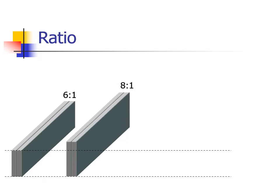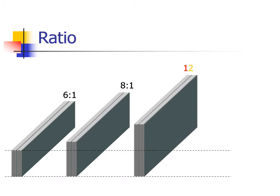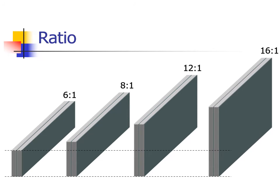Another common grid ratio is eight-to-one. Note that it is two units higher than the six-to-one grid. Twelve-to-one grids are commonly found in table buckies. Can you see this is twice as high as the six-to-one grid? A sixteen-to-one grid is probably the highest ratio you'll encounter in radiologic imaging. It is twice the height of the eight-to-one grid.